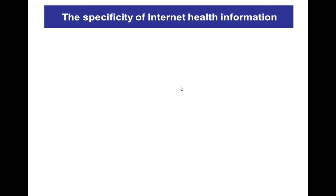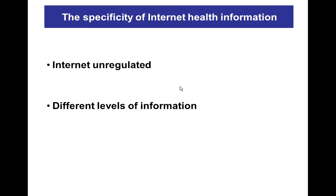The second reason concerns the specificity of internet health information. Internet information is very different from traditional sources like books or encyclopedias. The internet is an unregulated network where anyone can publish without censorship, so different levels of web pages may be found, from advertising to expert opinions.